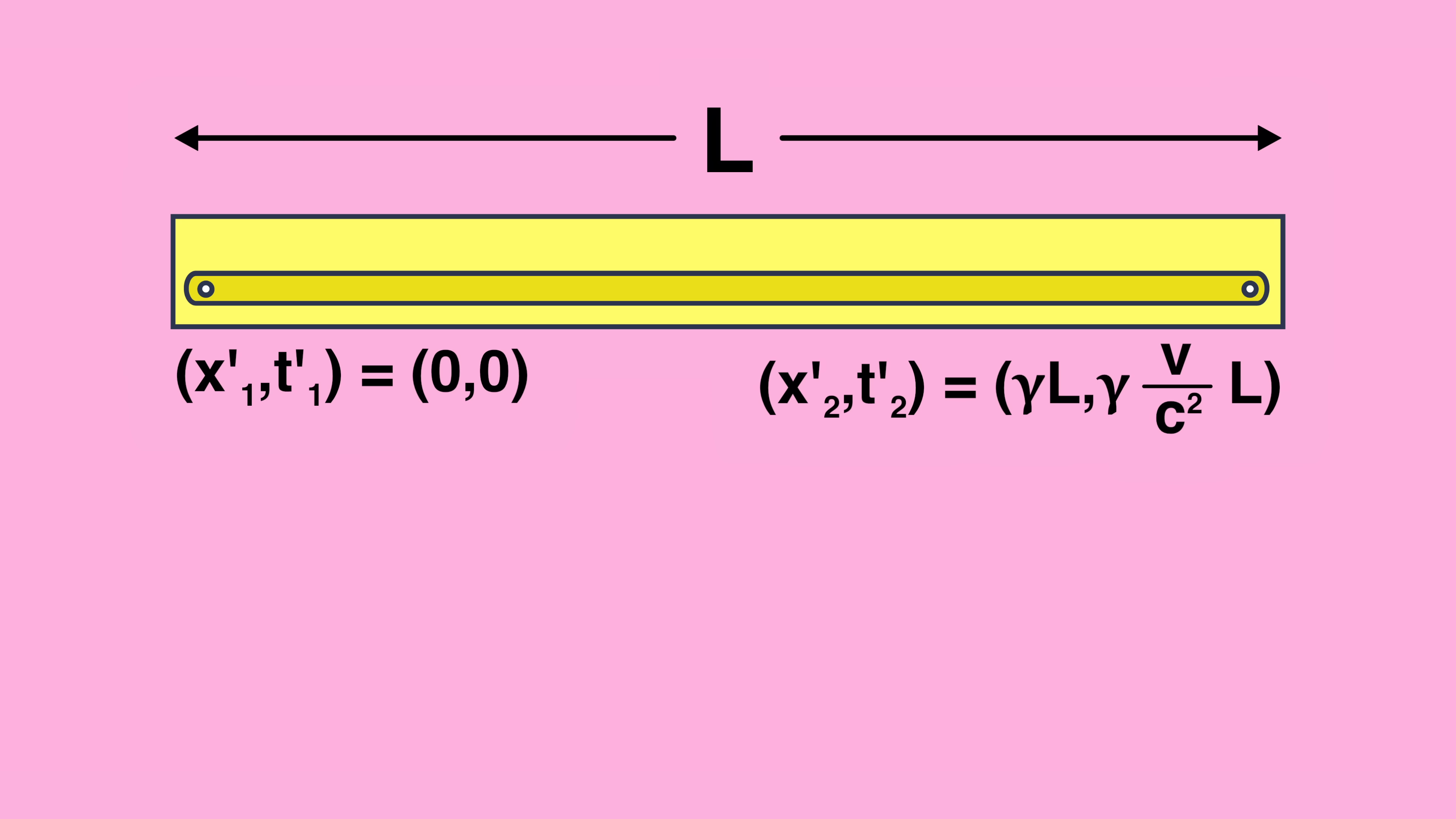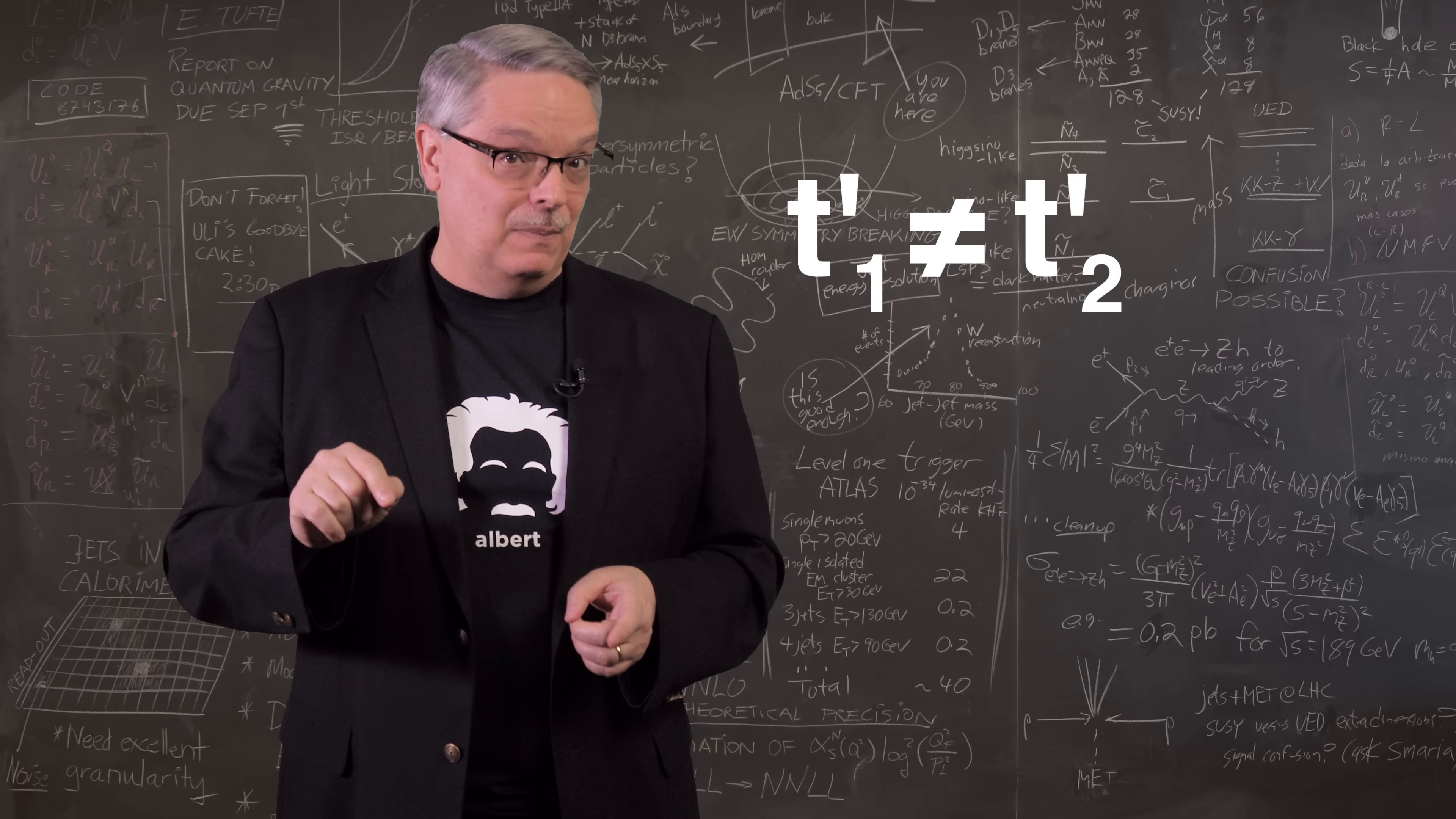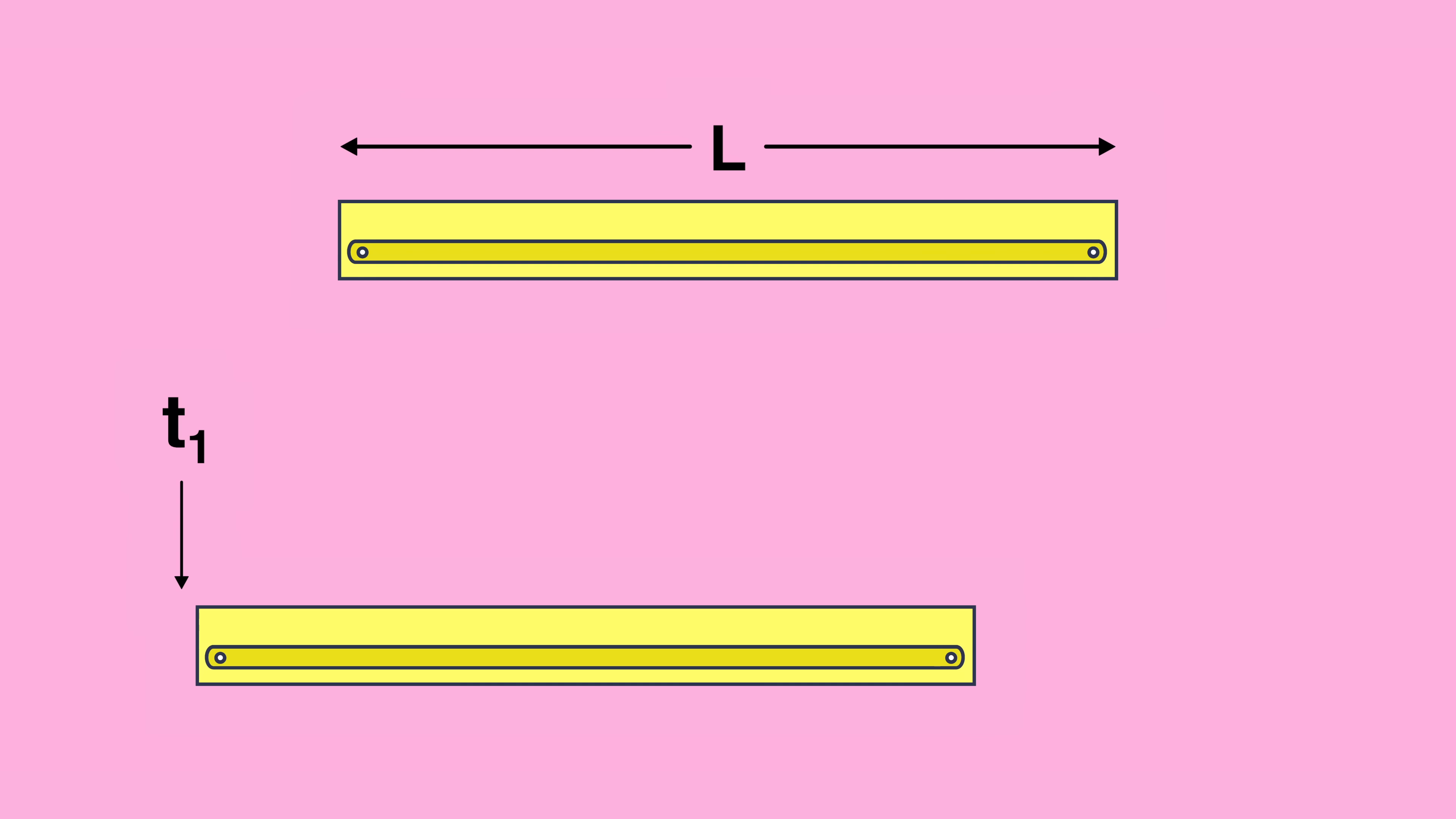But before you get that in your head, let me draw your attention to something very, very important. Look at t1 prime and t2 prime. t1 prime is zero and t2 prime is gamma v over c squared times L. Remember that those are times and they're not the same. That means that the primed observer didn't measure the location of both ends of the stick at the same time. And since the stick is moving according to the primed observer, that's not the way to measure its length. You totally not get the right answer. It just doesn't make sense.